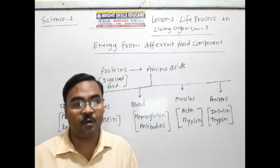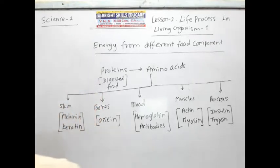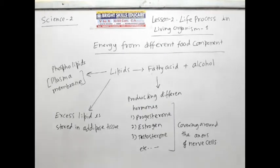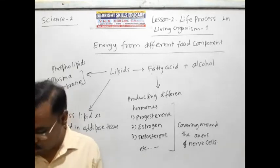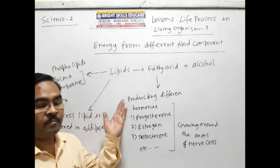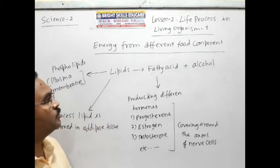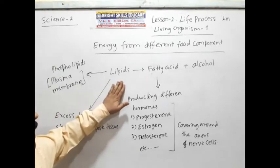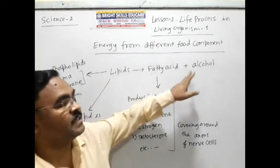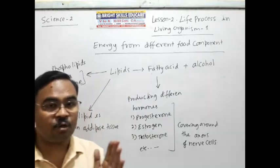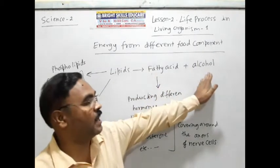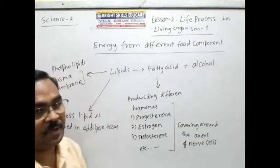These are the proteins required by the different organs. Just note down this flowchart, then we will proceed further. Now we have already seen about glucose and proteins — now about fats. Lipids are actually made up of fatty acids and alcohol.